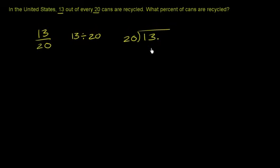Since we're going to get a value less than 1, let's put a decimal right over here. And let's add a couple of 0's, as many 0's as we would need.